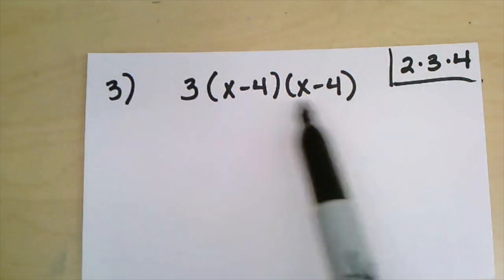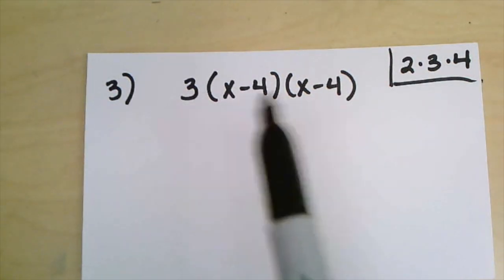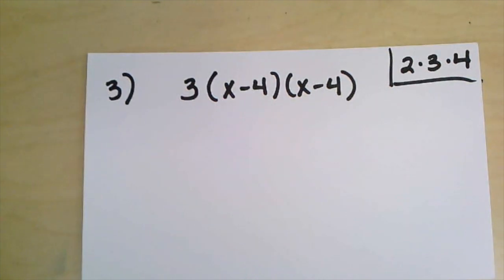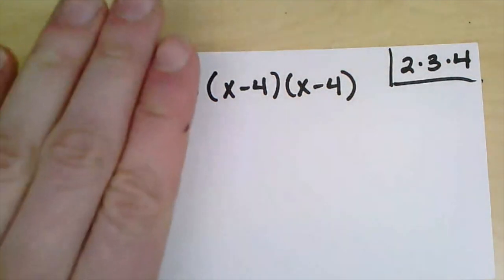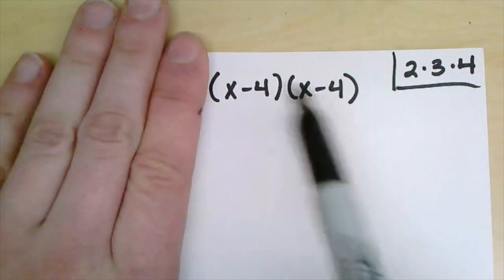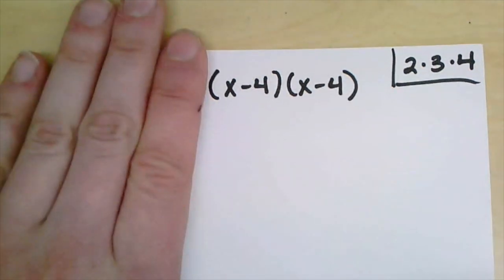So going back to this example now, I really have 3 times this parenthesis times this parenthesis. My preferred method to do this is to pretend that the number out in front is not here and just look at these two right here. I can use any method.